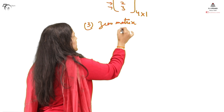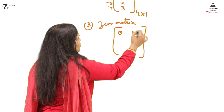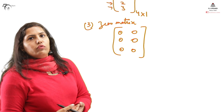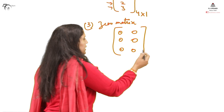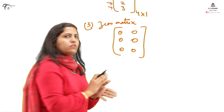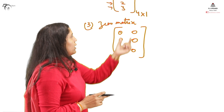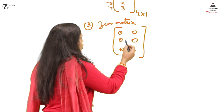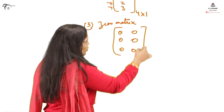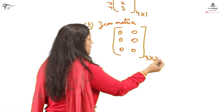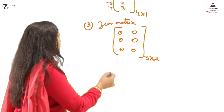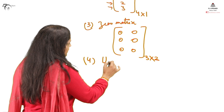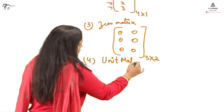Moving to another type: the zero matrix. By name alone it tells you — it will have zeros only. The number of rows and columns can be anything; there is no condition on order. The only condition is that all entries will be zero. For example, a matrix with three rows and two columns where every entry is zero — this can be of any order as long as all elements are zero.